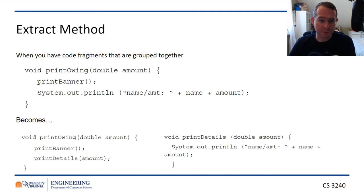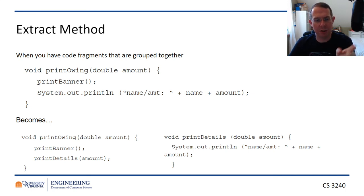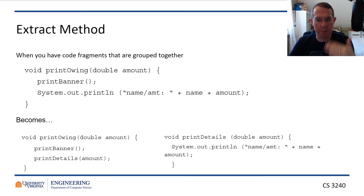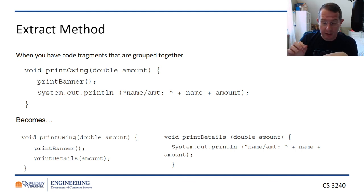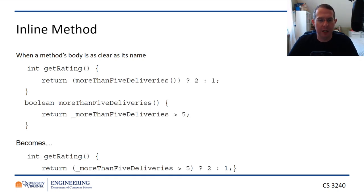Extract method: maybe you have a printOwing function with a print banner section inside it. Well, maybe we need to make that a separate function. So printOwing calls printBanner and then printDetails. If you look at that top-level function, you can just tick off what's happening — print the banner, print the details. It's easier to read the version that calls named sub-functions than the one where you have to read each line and figure out what's going on.